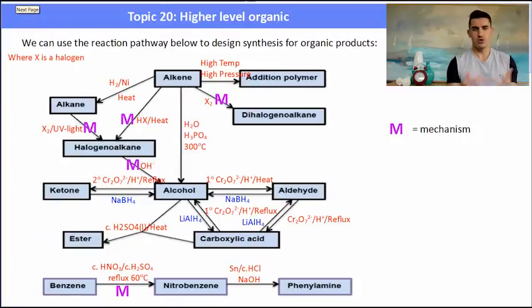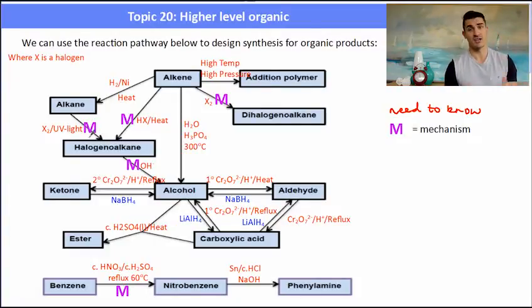Now we can use the reaction pathway below to design a synthesis for an organic product. I'm not going to go through it all there. You can take a photo of that image if you need to. The M's represent where you need to know the mechanism. So not only could you be asked to convert from one to the other you could be asked to draw the mechanism for that process. Refer to this when you're practicing questions but you're not given it on the exam so you need to make sure that you do know it.